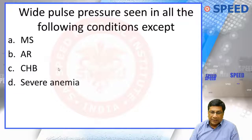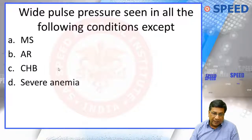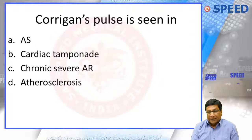Wide pulse pressure is seen in the following conditions, except which? AR produces wide pulse pressure. Complete heart block also produces wide pulse pressure, because in complete heart block the heart rate is low. Cardiac output equals heart rate multiplied by stroke volume — so when heart rate comes down, the stroke volume has to increase, producing wide pulse pressure and high systolic pressure. Severe anemia can also produce wide pulse pressure, but not mitral stenosis. Mitral stenosis gives a small volume pulse with low pulse pressure. Corrigan's pulse is seen in chronic severe AR, which produces wide pulse pressure.